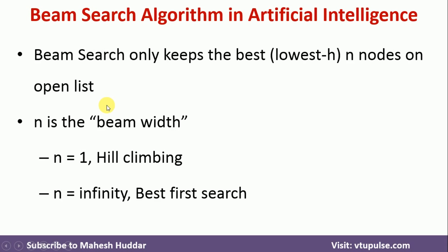But Beam Search algorithm is intermediate between these two extreme algorithms. I have already posted the videos, the link for those videos is given in the description below. Because Beam Search algorithm falls between these two, the value of N will be either greater than 1 or less than infinity, less than the number of successors over here.